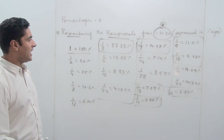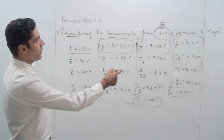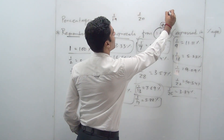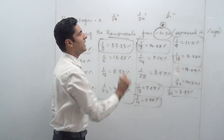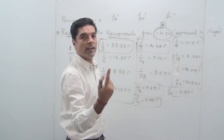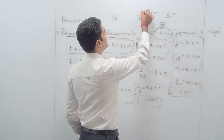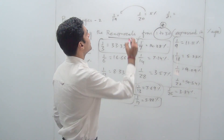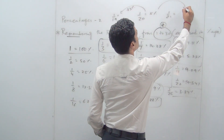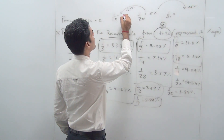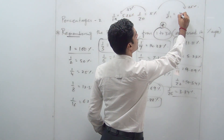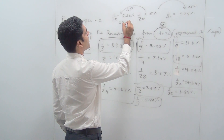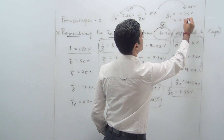1/18 we have already seen from the 1/9 family, which is 5.55%. Now 1/19, 1/20 and 1/21 can be remembered simultaneously. We know 1/20 is 100/20 which equals 5%. So 1/19 will be slightly more than 5% and 1/21 will be slightly less than 5% — approximately 0.25 more and 0.25 less respectively. So 1/19 is approximately 5.25% and 1/21 is approximately 4.75%. The exact values are 5.26% and 4.76%.